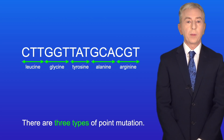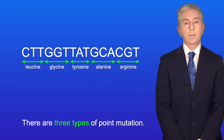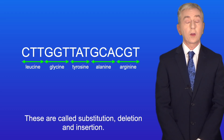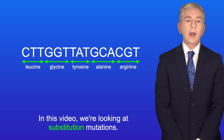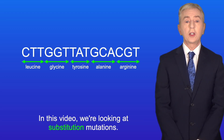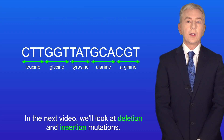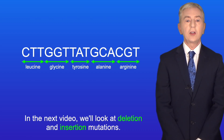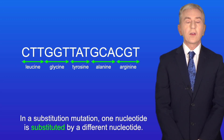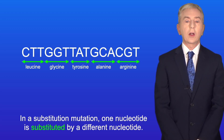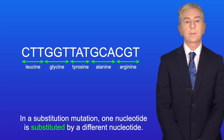There are three types of point mutation: substitution, deletion, and insertion. In this video we're looking at substitution mutations, and in the next video we look at deletion and insertion mutations. In a substitution mutation, one nucleotide is substituted by a different nucleotide.